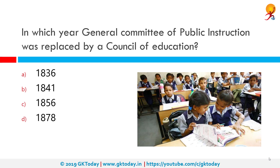In which year was the General Committee of Public Instruction replaced by the Council of Education? The correct answer is 1841. A General Committee of Public Instruction was set up in 1823 to look after the development of education in India. In 1841, the General Committee of Public Instruction was abolished and in its place, a Council of Education was established.